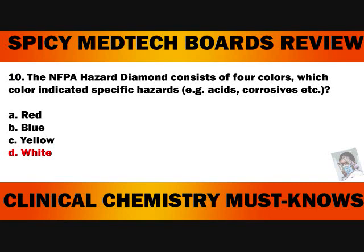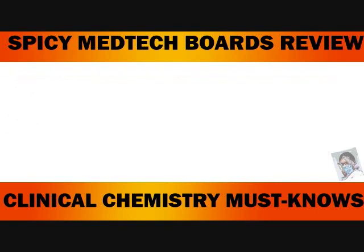In the NFPA hazard diamond, letter A, Red, stands for Flammability. Letter B, Blue, stands for Health hazards. Letter C, Yellow, stands for Instability hazards like electricity. Letter D, White, stands for Specific hazards like acids and corrosives.